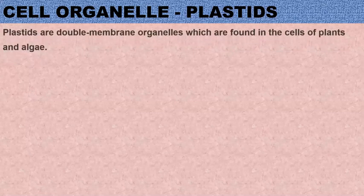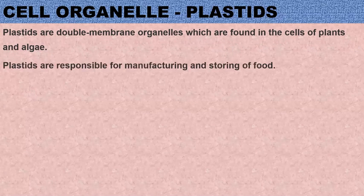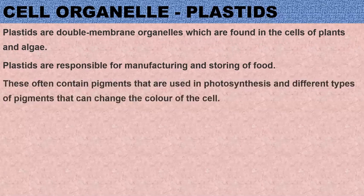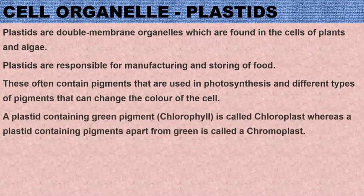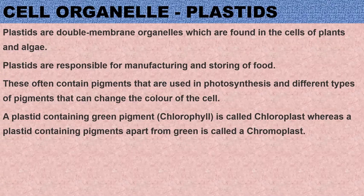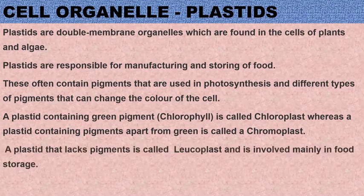The another cell organelle is plastids. Plastids are double membrane organelles which are found in the cells of plants and algae. Plastids are responsible for manufacturing and storing of food. These often contain pigments that are used in photosynthesis and different types of pigments that give color to the cell. A plastid containing green pigment chlorophyll is called chloroplast, whereas a plastid containing pigments apart from green color is called a chromoplast. Some plastids lack pigment and are called leukoplasts, which are involved mainly in the storage of food.